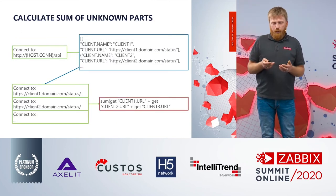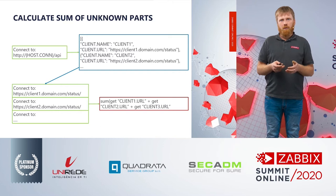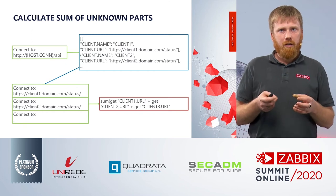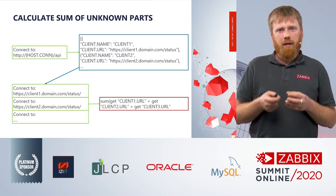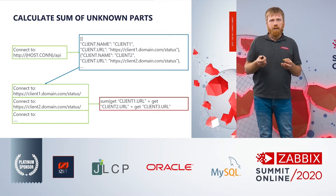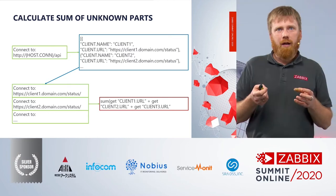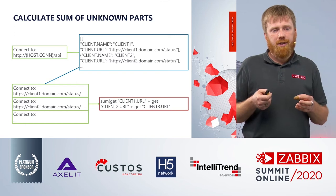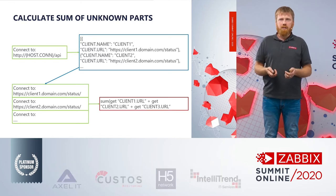Next, if we have a situation where we don't know how many values we will need to get — on a general basis, if we have some place where we can get information and need to get data, we could create an LLD, get all the information, create items from prototypes and monitor them. But this can be too slow and it's very hard to automatically do calculations out of all the values. So in this example, we go to some address and get all possible values, then go to all of those addresses, get all the results and do some calculations like sum, average, or whatever else you need.